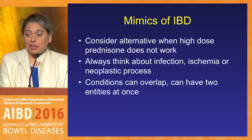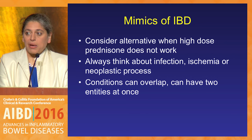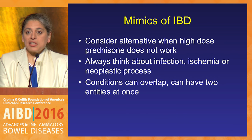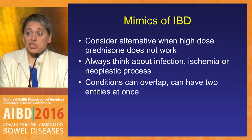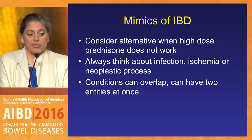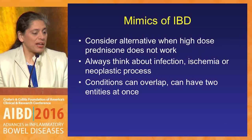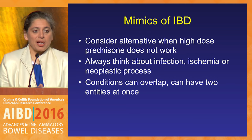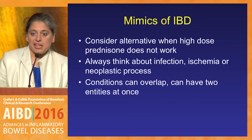To finish — mimics of IBD: you have to consider an alternative when high-dose prednisone given in the ER does not work. Always think about infection, ischemia, and a neoplastic process. The 'itis,' the 'emia,' and the 'oma' always still have to be in your differential. Remember that conditions can overlap — patients with established IBD can also develop something else. Hopefully I've given you some context to think about if it's not truly IBD. Thank you.